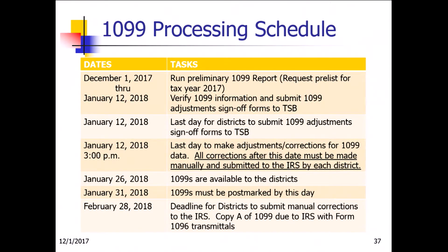Make sure you put that on your calendar, because if you miss that deadline, each district will be responsible for submitting manual corrections. The 1099s will be available to districts on January 26th and must be postmarked by January 31st. The deadline for filing with the IRS with copies of Transmittal A would be February 28th.